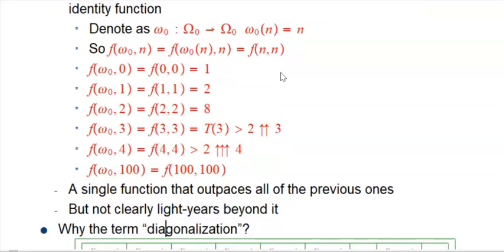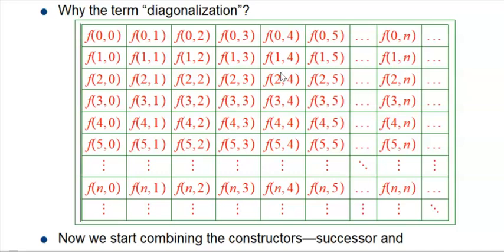When the input changes, you actually change the level of the function, and that gives you something that grows incredibly fast. Because every time you ratchet up the input, you're in a totally different order of growth in terms of the function you have.